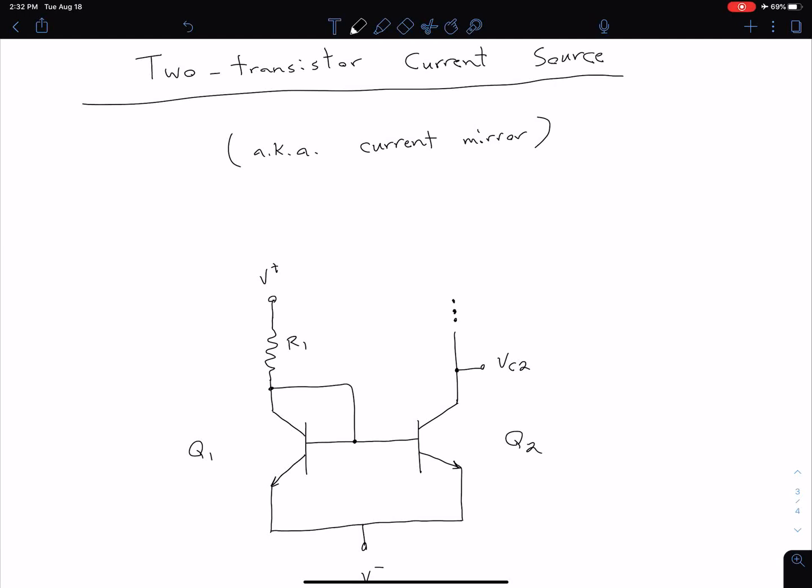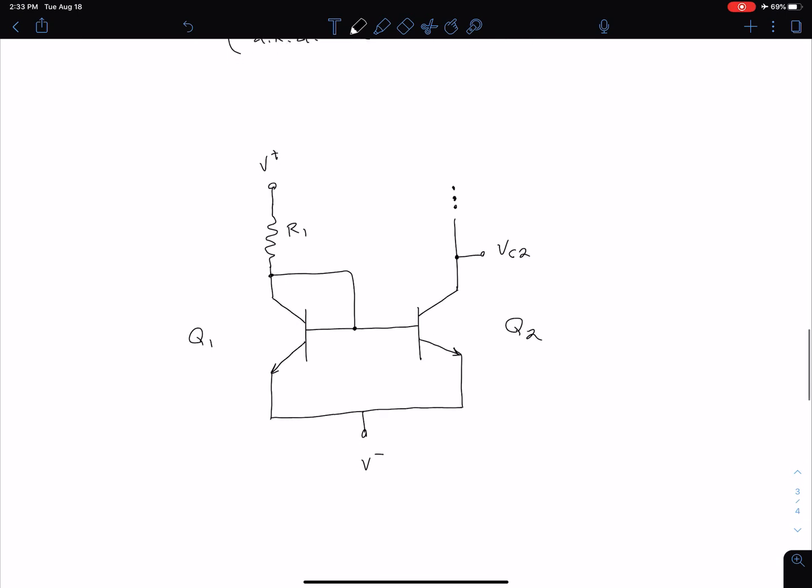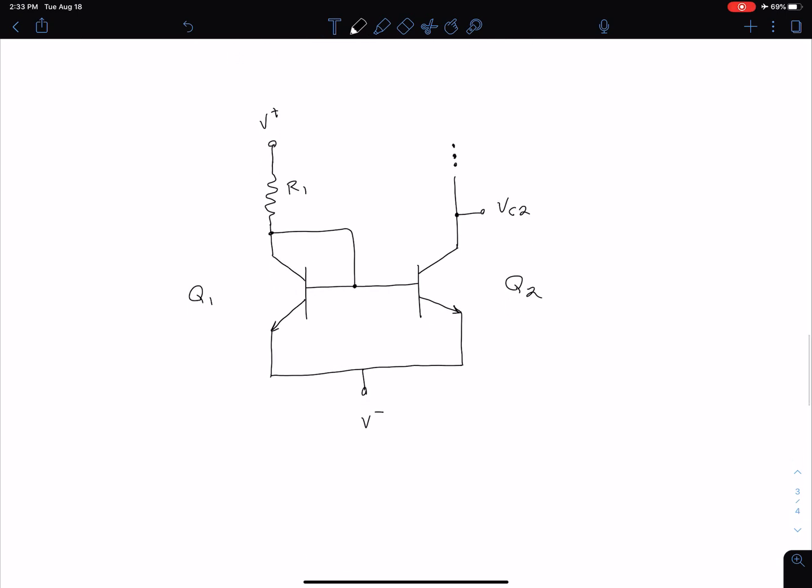We're going to start by looking at a two-transistor current source, which we can also call a current mirror. We'll see the reason for that name as we do our analysis later on. One advantage of this two-transistor current source is that it only has two transistors: Q1 on the left and Q2 on the right.